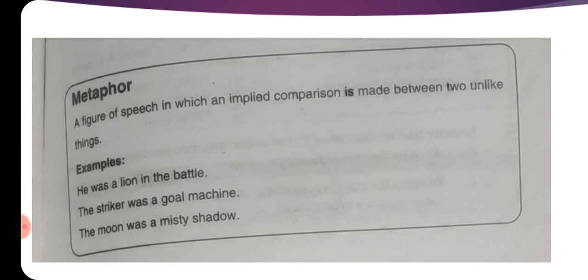Now students, simile میں comparison performed کیا. Examples: He was a lion in the battle. The striker was a gold machine. Now a human being is given the name of machine. Then we have, The moon was a misty shadow یعنی ہم کسی بھی چیز کو directly جو ہے وہ unlike object کا نام دے دیتے ہیں. This is called Metaphor.